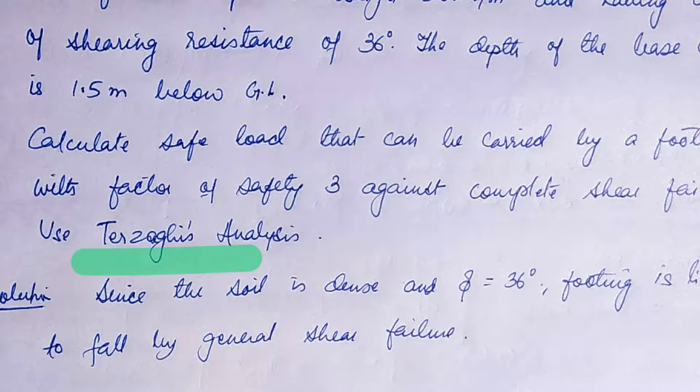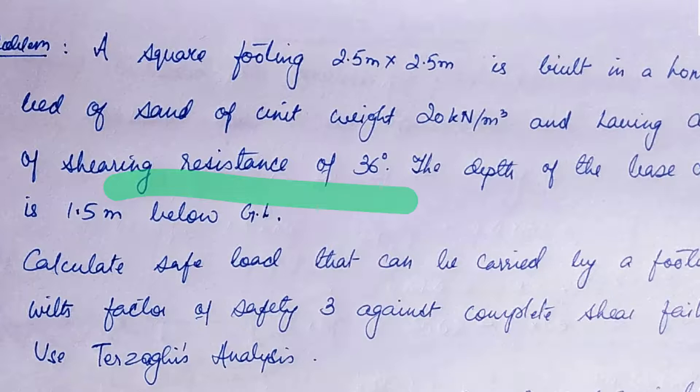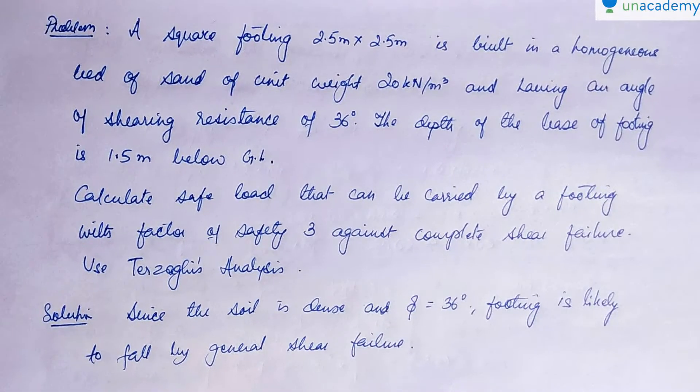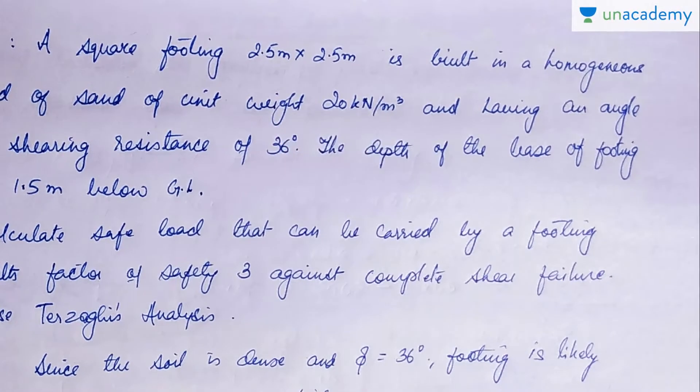Since the shearing resistance is 36 degrees, this implies that failure is going to occur by general shear failure. From the table we can find the values of NC, NQ and N gamma under general shear failure conditions. The footing size is 2.5 x 2.5, area is known, gamma is 20 kN/m³, and depth DF is 1.5 meter below ground level.